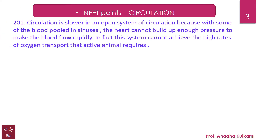Point number 201: Circulation is slower in an open system of circulation because with some of the blood pooled in the sinuses, the heart cannot build up enough pressure to make the blood flow rapidly. In fact, this system cannot achieve the high rates of oxygen transport that an active animal requires.